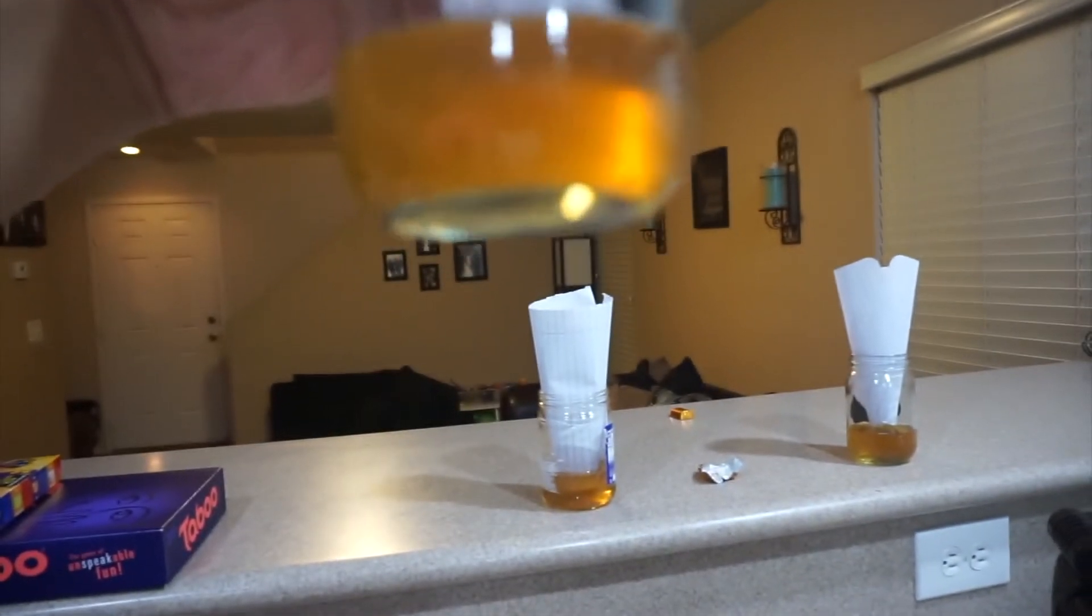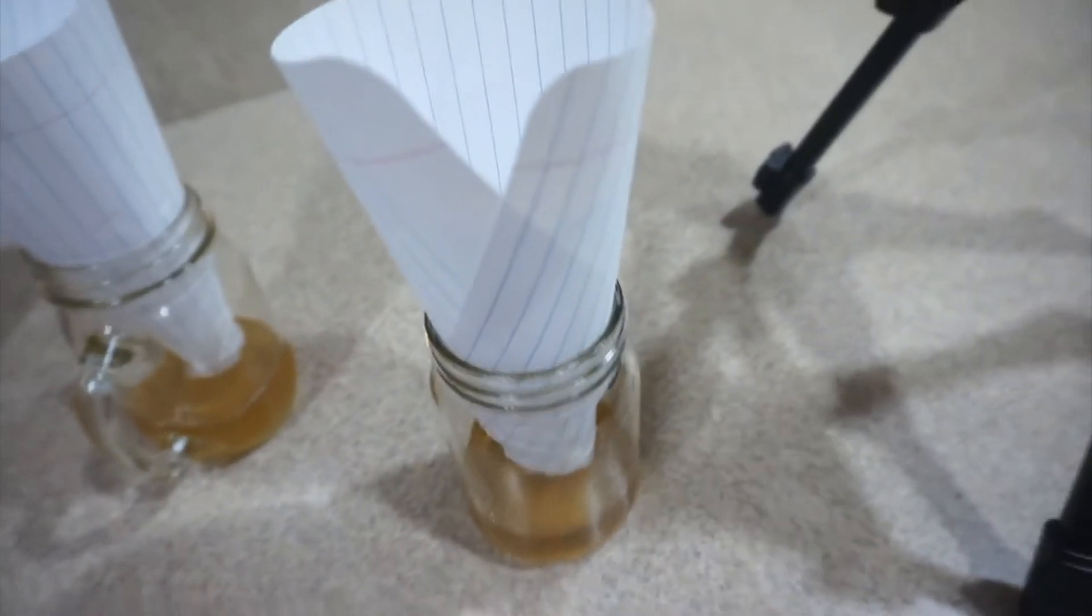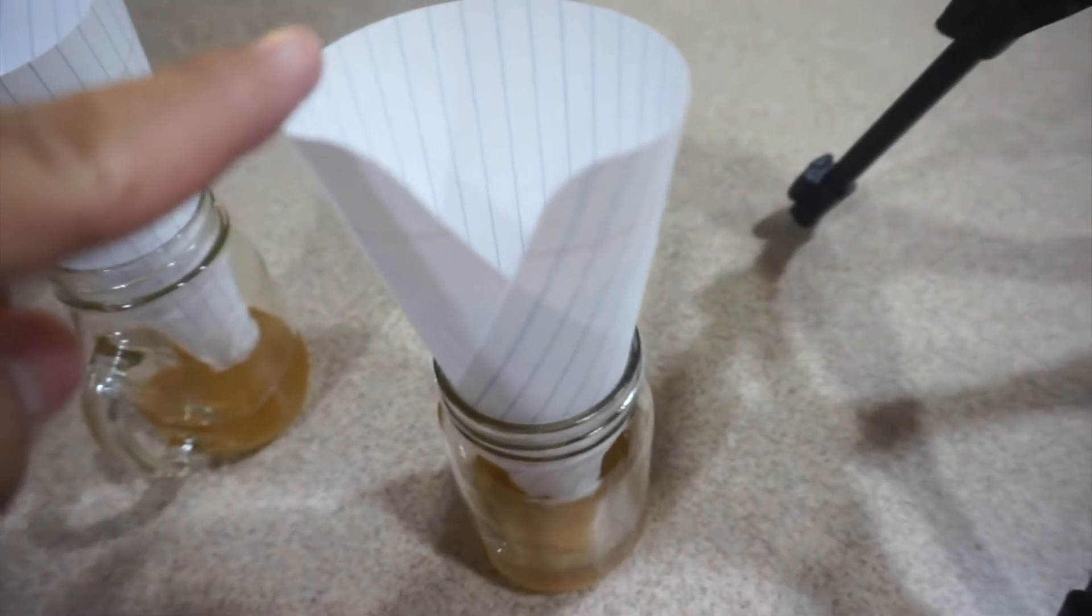On camera it looks like there's about three, but there's more towards the side. And what they do is, I watched one actually, they land on the paper and then crawl down the funnel and then they get trapped and they can't come out.